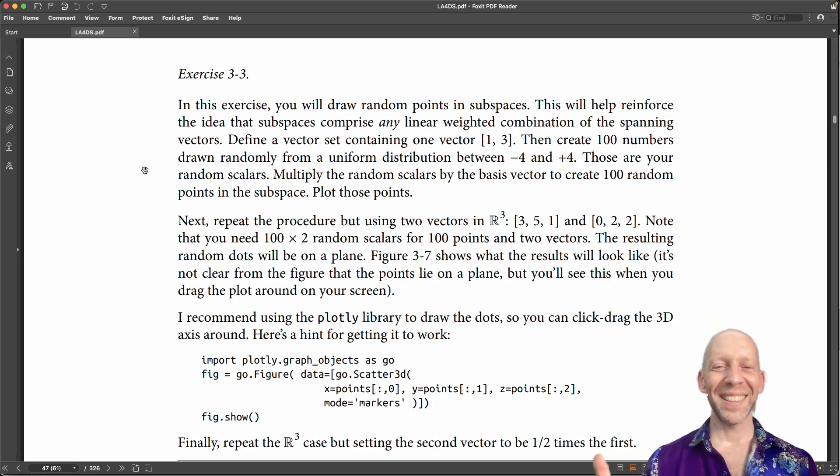So we are not going to take all points between minus infinity and plus infinity. That would take a really long time, like the life of the universe. It would take more computational power than there is in the universe. So we're not actually going to do that. That's the theory. The application, how we are going to visualize it is by generating a bunch of random scalars between minus 4 and plus 4.